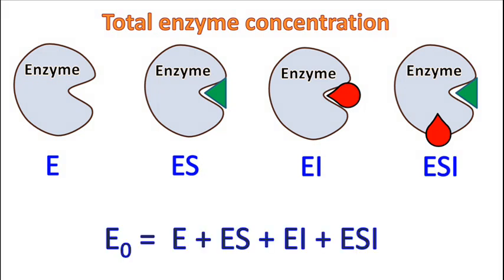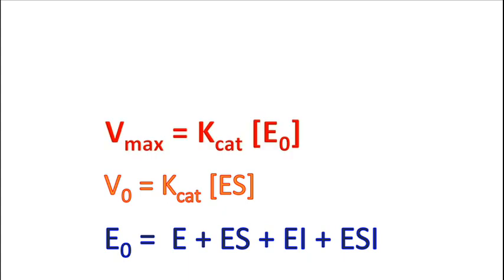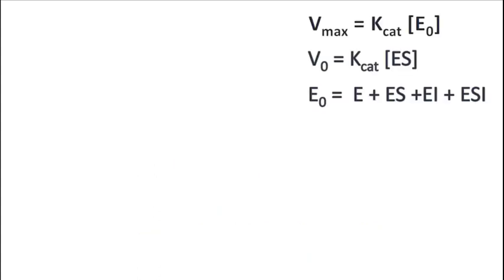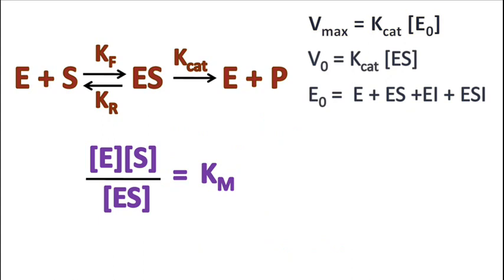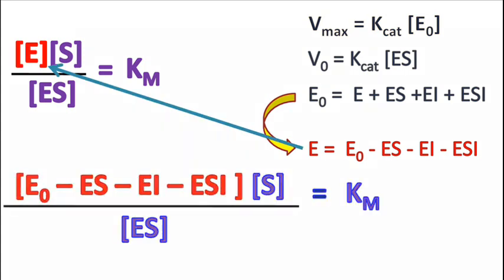The total enzyme concentration can be given as: E₀ is equal to E plus ES plus EI plus ESI. The velocity v₀ is equal to kcat times ES, and maximum velocity Vmax is equal to kcat times E₀. Also, E times S upon ES is equal to Km.